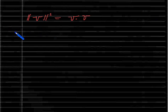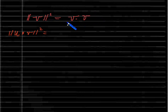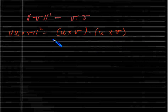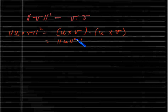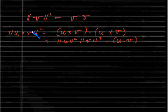So what we're going to do is write the norm of u cross v squared using this property of the norm squared. We're going to write this as u cross v dot u cross v. Now we expand this and simplify, and when we get done we'll obtain that the norm of u squared times the norm of v squared minus u dot v squared is equal to this.